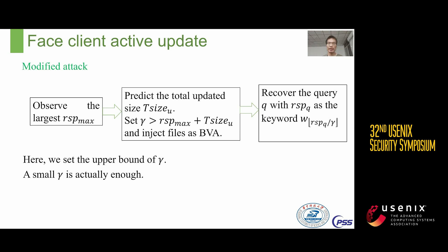Finally, assuming that during our attacks the client actively updates a large number of files, we must modify our attack to cope with the noise caused by these updates. In the baseline phase, we observe all queries and find the largest response size, denoted as RISP_max. In the injection phase, we predict the total update size, denoted as T_size_U, and set gamma to satisfy gamma > RISP_max + T_size_U, then inject files as BVA with the new parameter gamma. In the recovery phase, we restore the query q with response size RISP(q) as keyword W_{round(RISP(q)/gamma)}. Due to the large enough gamma, we can easily absorb the impact of updates; in reality, a small gamma is sufficient to achieve a non-negligible recovery rate.